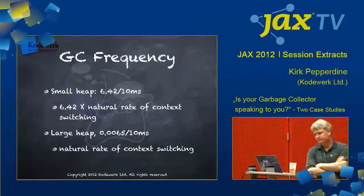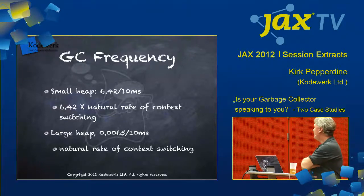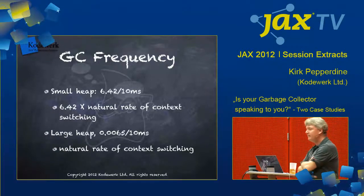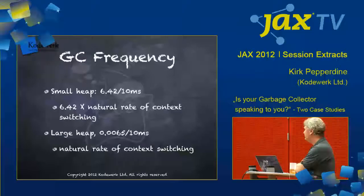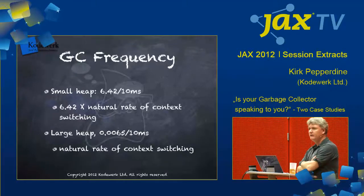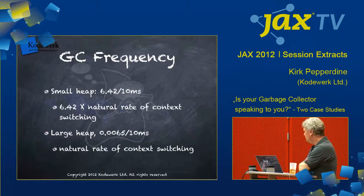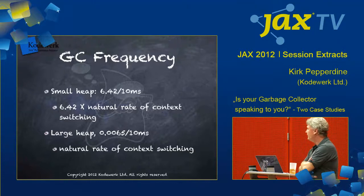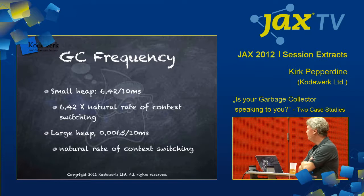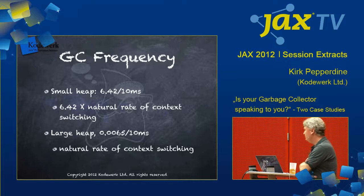In this case, the small heap collected at 6.24 times every 10 milliseconds. I use 10 milliseconds quite intentionally here, because that's the natural rate of context switching on a machine. And now we're at 6.42 times that natural rate of context switching. With a large heap, we're at 0.0065 context switches per 10 milliseconds, which generally means that we're at one context switch per 10 milliseconds.